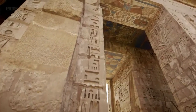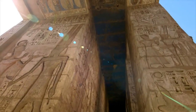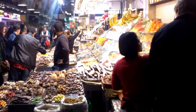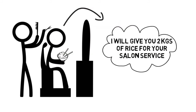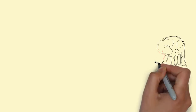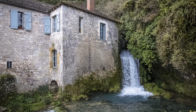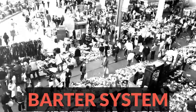Most of us might know that in the primitive society, currency was not the means of buying and selling things. Goods were bought and sold for other goods and services. For example, a hairdresser might exchange rice for the service that he is giving, or a milkman can exchange his milk with a carpenter for a wooden chair. In those good old days, this is how people traded with each other. This was called the barter system.